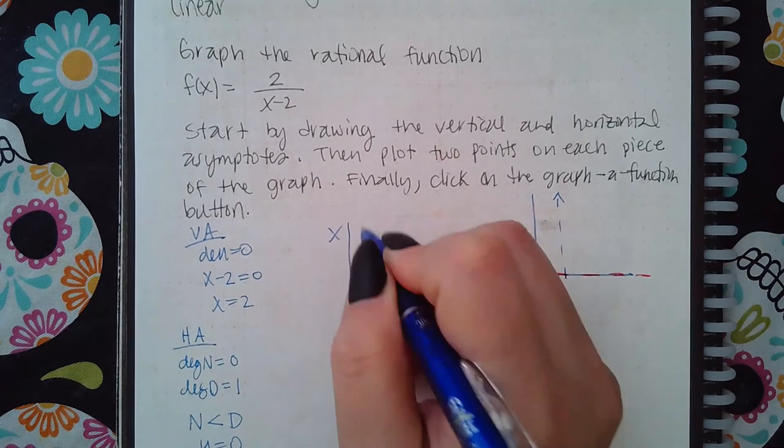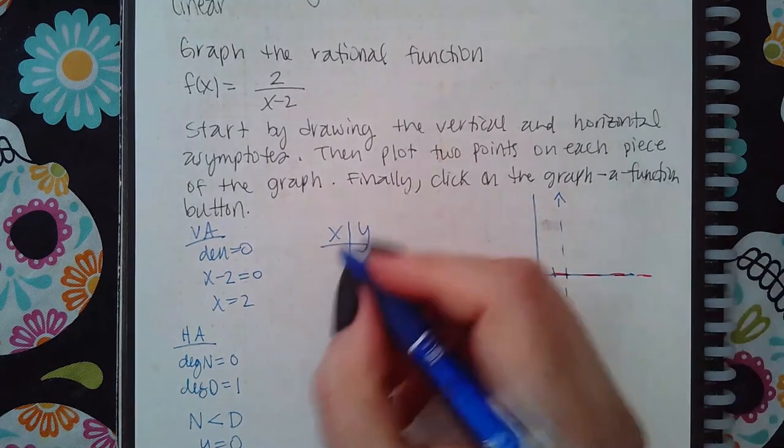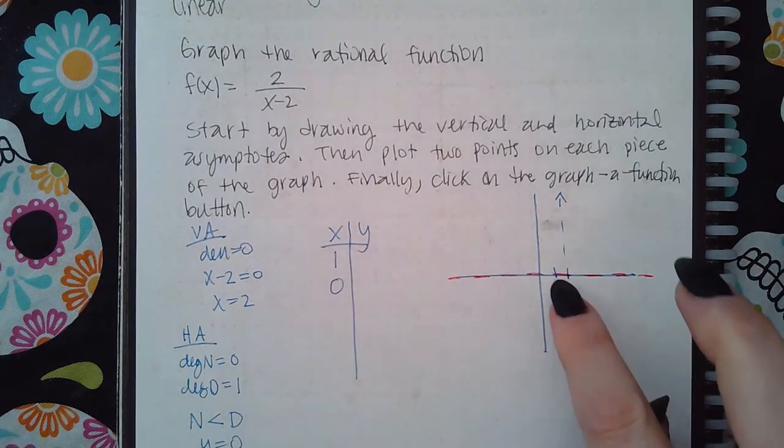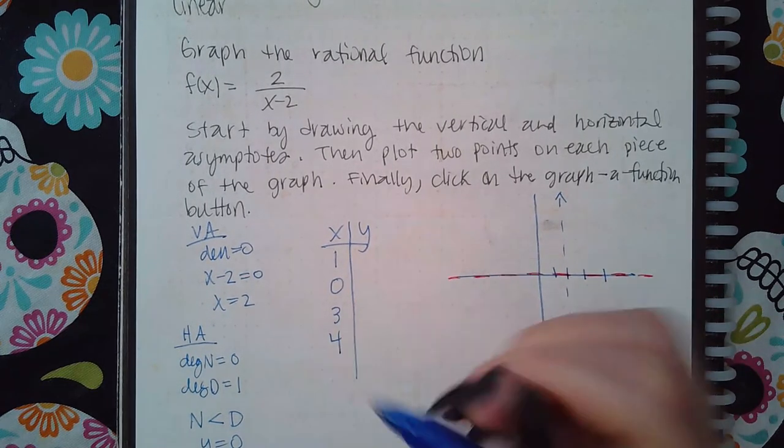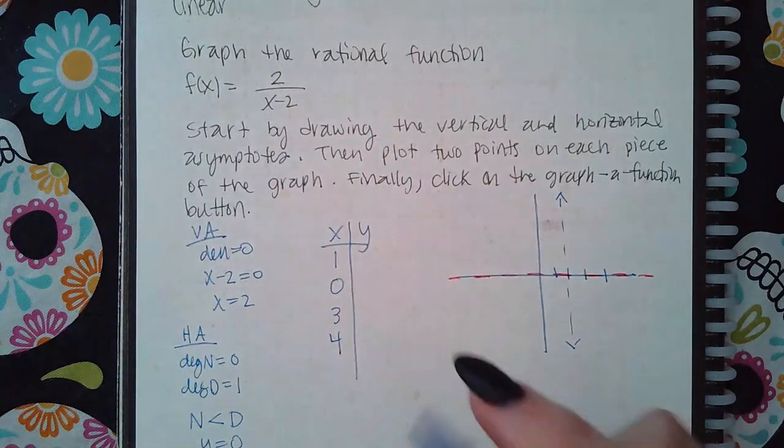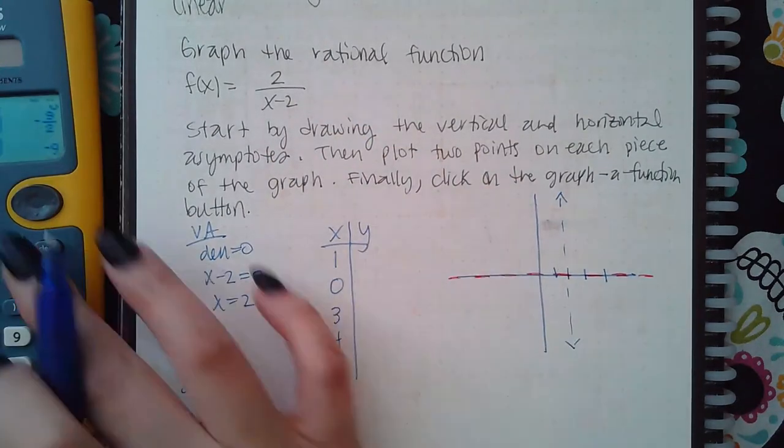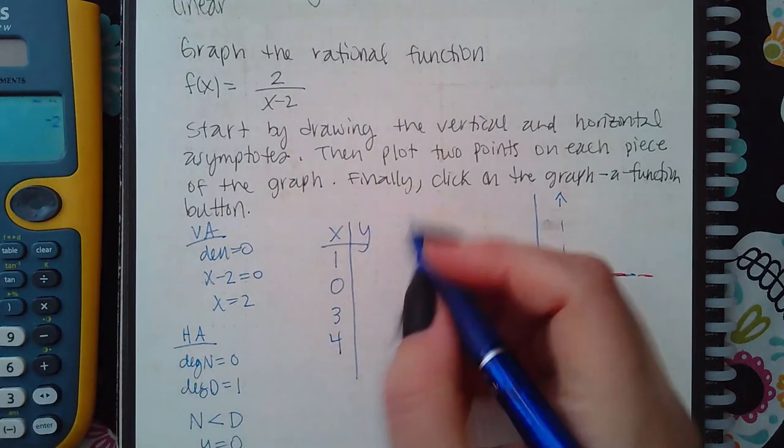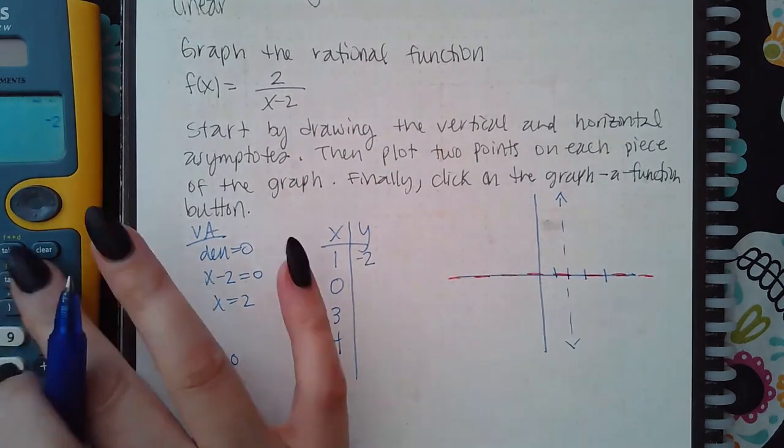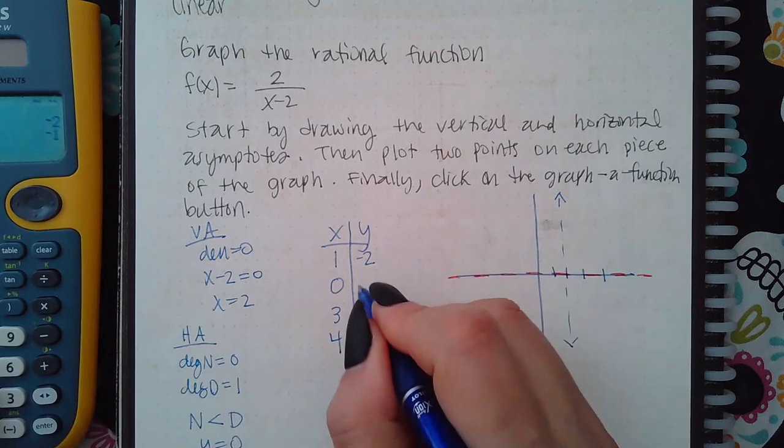Then it says it needs two points on each side. So if I make a table, this is two, so I'm going to use one and zero to get two points on this side, and then three and four to get two points on the other side. I'm plugging them into the function. Two over negative one is negative two, two over negative two is negative one.